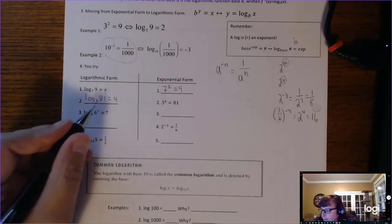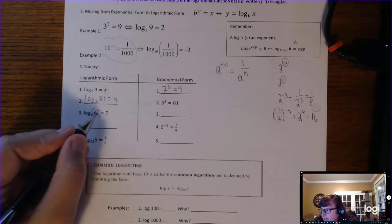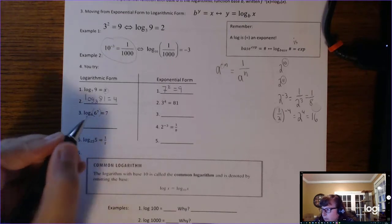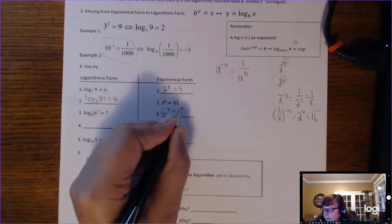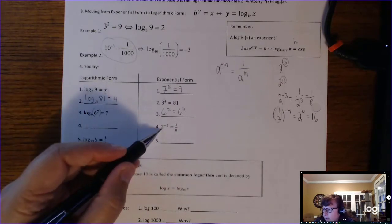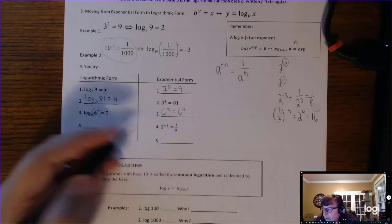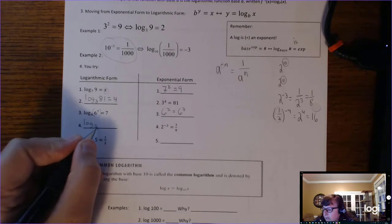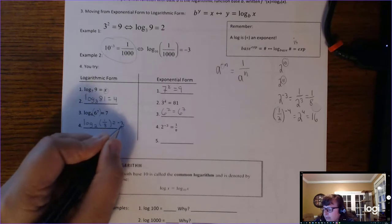This example has a bit more going on. We have log base 6 and 6 to the 7th equals the number, so the base is 6, the exponent is 7, and the answer is 6 to the 7th. Next, 2 to the negative 3 equals 1 eighth in exponential form. To write it in log form: log base 2 of 1 eighth equals negative 3.